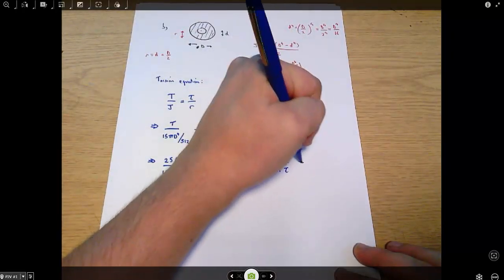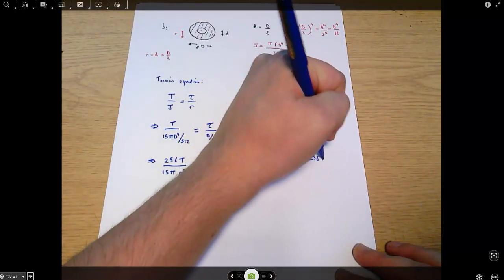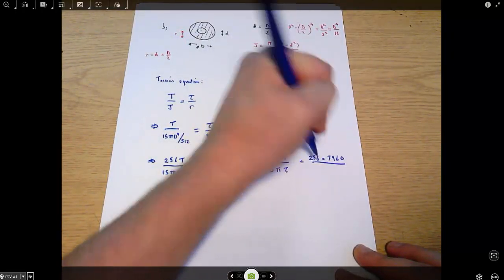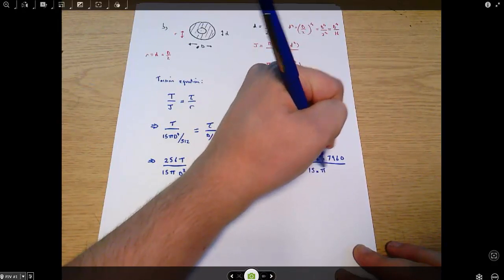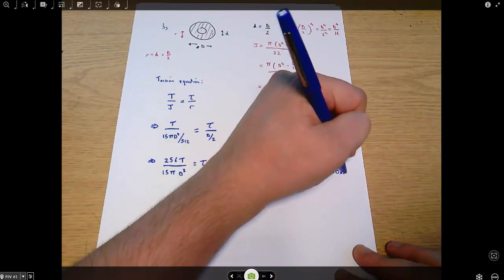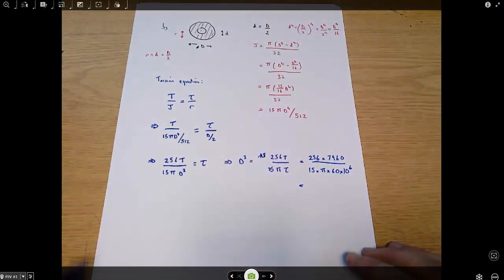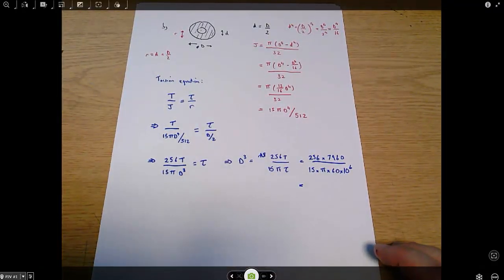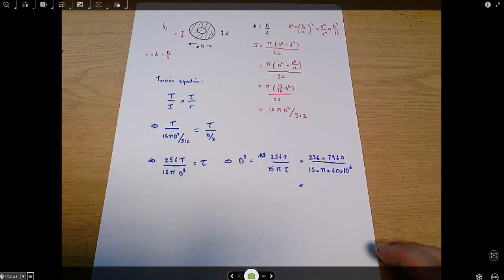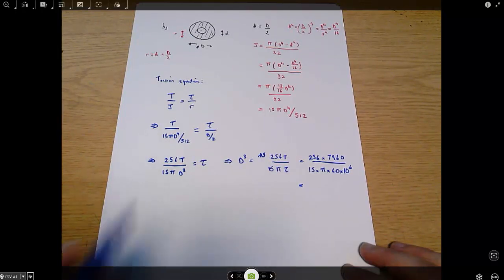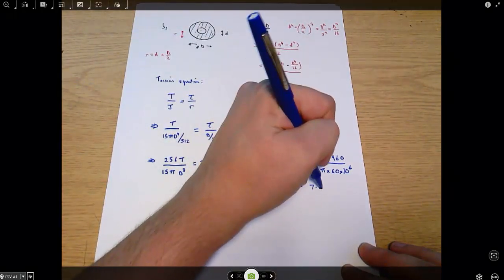That equals - again we can put in numbers for this - that's 256 times 7960 divided by 15 times pi times 60 times 10 to the 6.